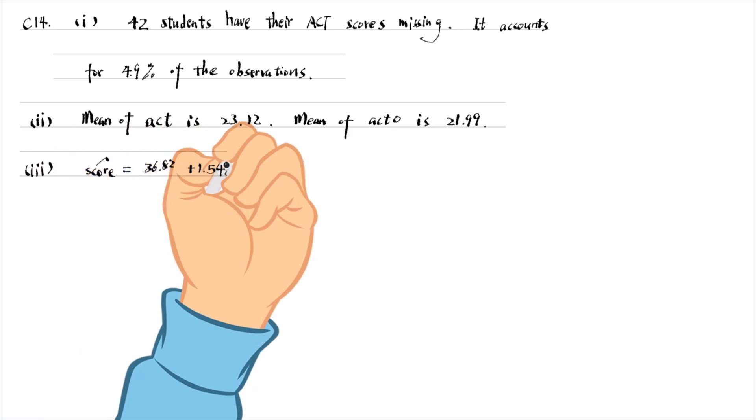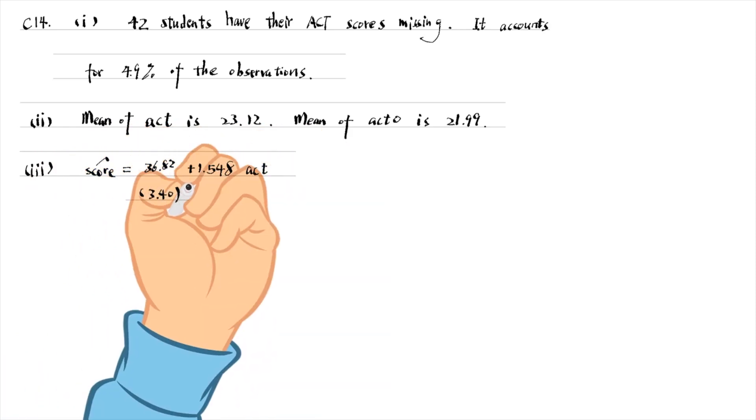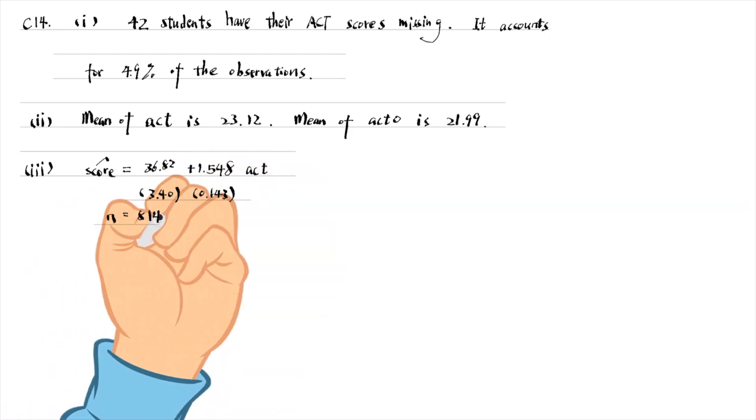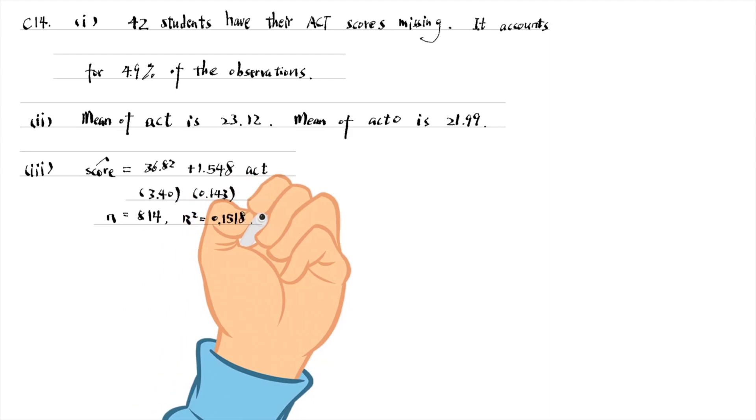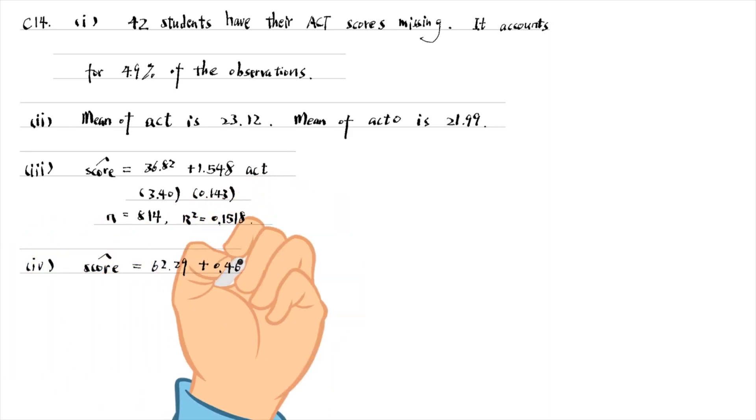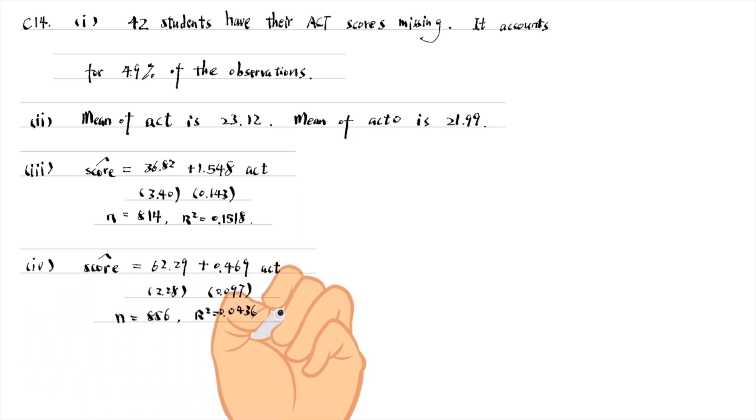For part 3, the slope coefficient is 1.548 and the heteroskedasticity robust standard error is 0.143. In part 4, the slope coefficient is 0.469. It is much lower than that in part 3. There's no justification for assigning a 0 to the missing values.